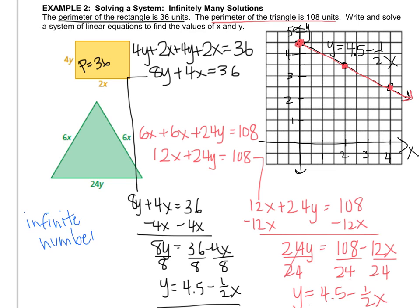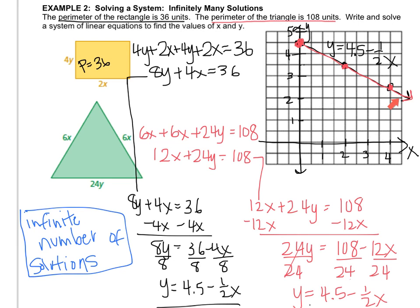Because all of the possible values that could intersect would exist. Remember, the answer to a system is the point where they intersect, and these lines are intersecting everywhere. So they have an infinite number of intersection points.